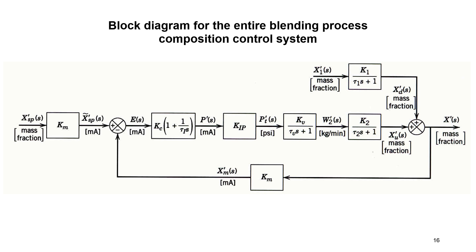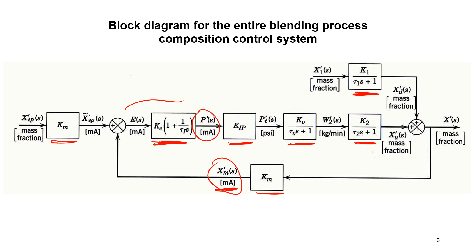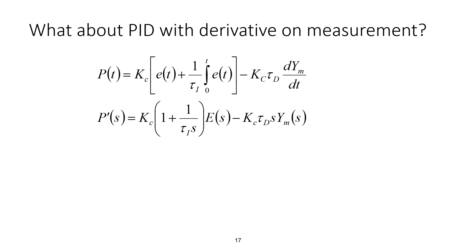We have now put in all the different transfer functions: the measurement, the PI controller, KIP, the valve, the process, and the disturbance. I've also labeled these with standard units typical in process control — pneumatic signals and milliamp signals going into a PID block. In modern DCS (distributed control systems) everything is digitized and occurs within the computer, but once it reaches the valve that's a PSIG signal to a pneumatically actuated valve affecting flow rate. For the purposes of this class, we'll assume milliamp signals.